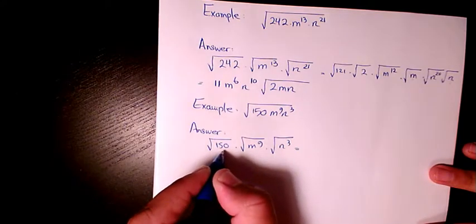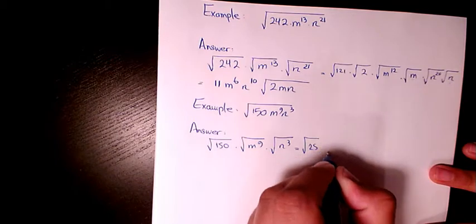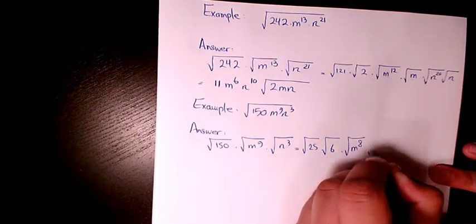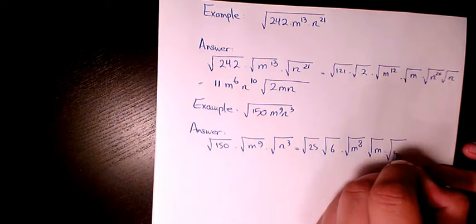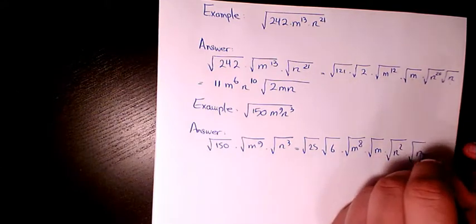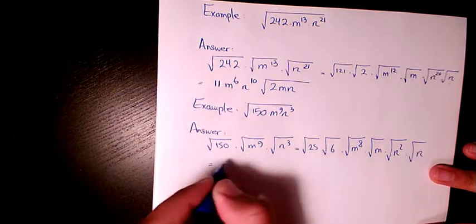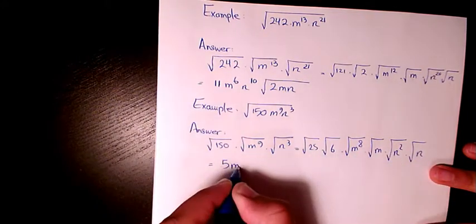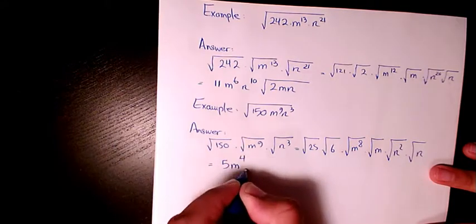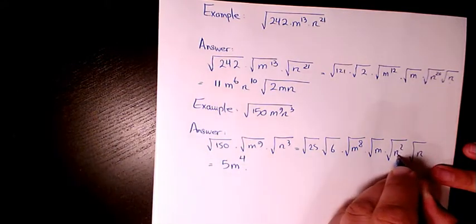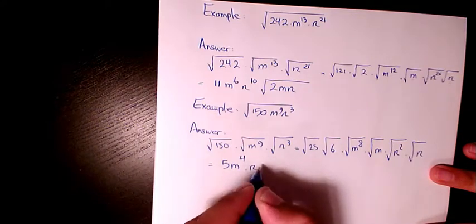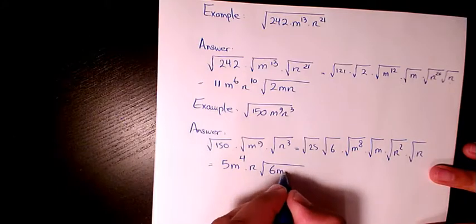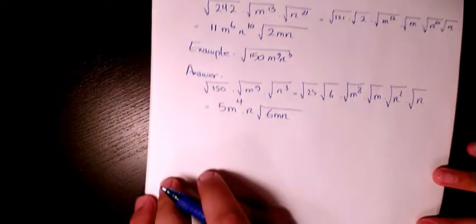150 is 25 times 6, so we have 25 times 6, m to the power of 8 times m, and n to the power of 2 times n. The square root of 5 squared is just 5. The square root of m to the power of 8 is m to the power of 4, and the square root of n to the power of 2 is n. So the final answer is 5m⁴n times the square root of 6mn.